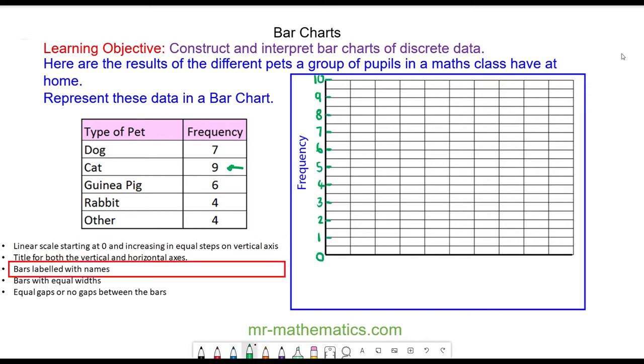Next, I'll label the horizontal axis as 'Type of Pet'. The bars along the horizontal axis must be equal width with the same equal gap between them.